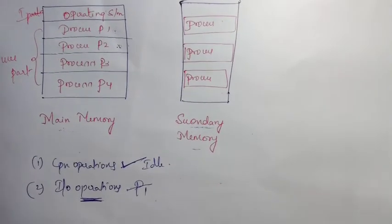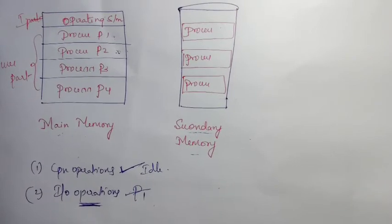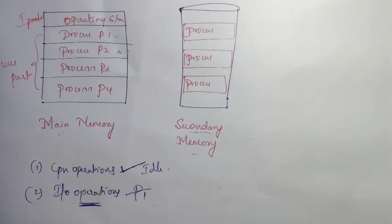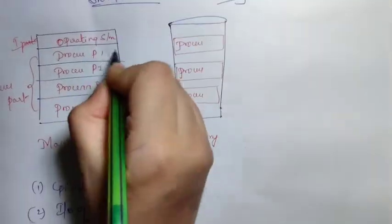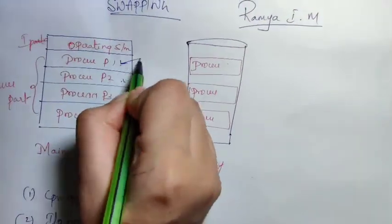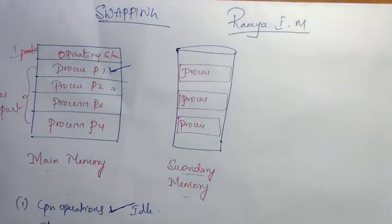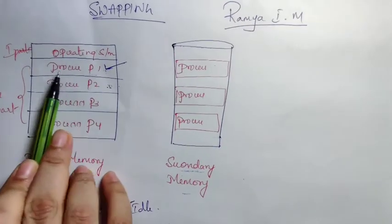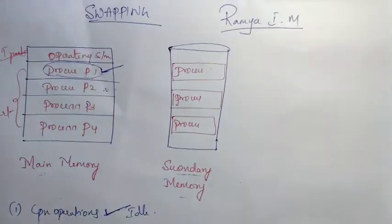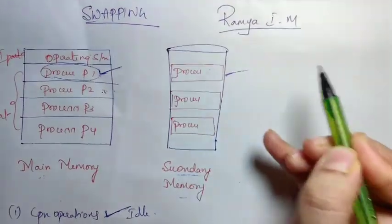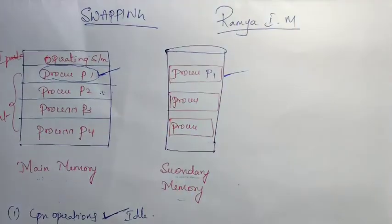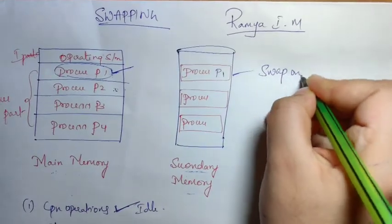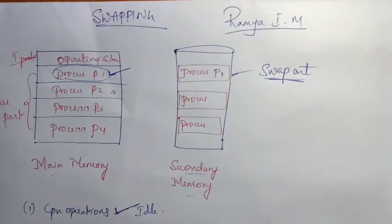Example one: if process P1 completes all its operations, there is no need for the CPU for that process. So this process will be transferred from main memory to secondary memory. This transfer is called a swap out. The operating system transfers the process to secondary memory — this is known as swap out.